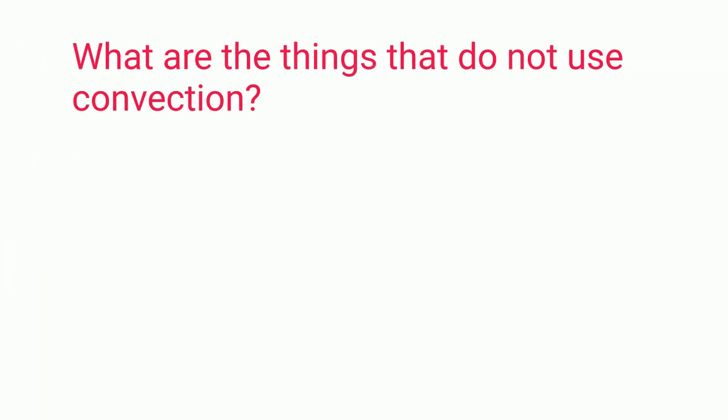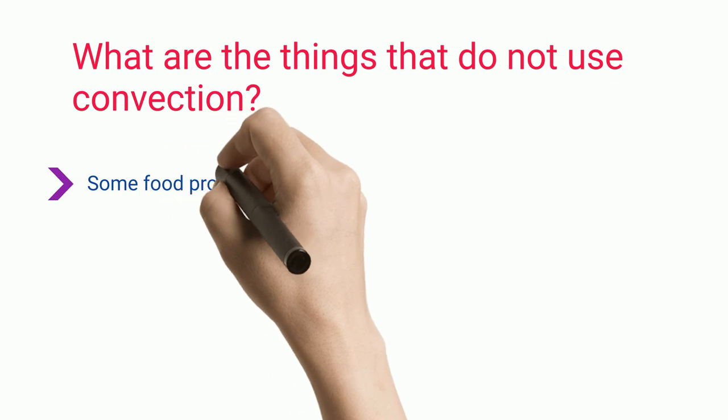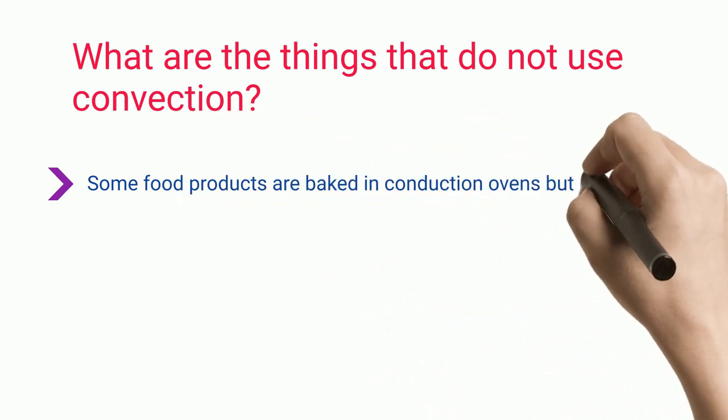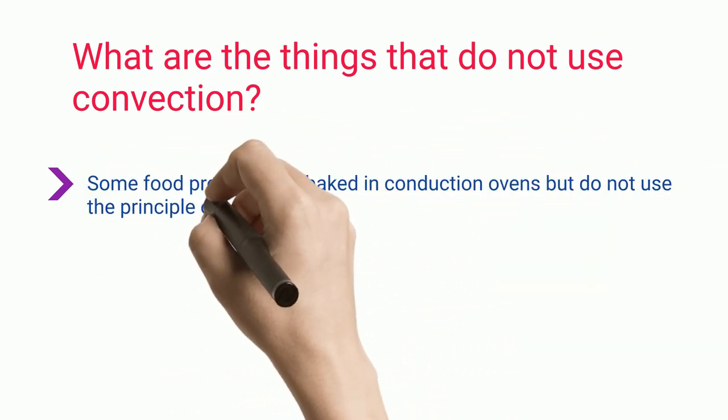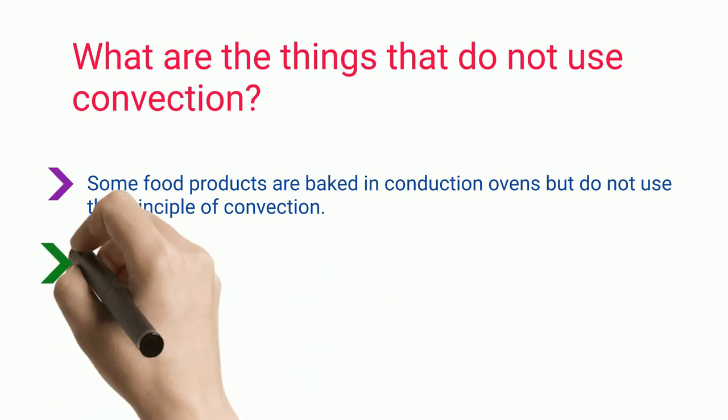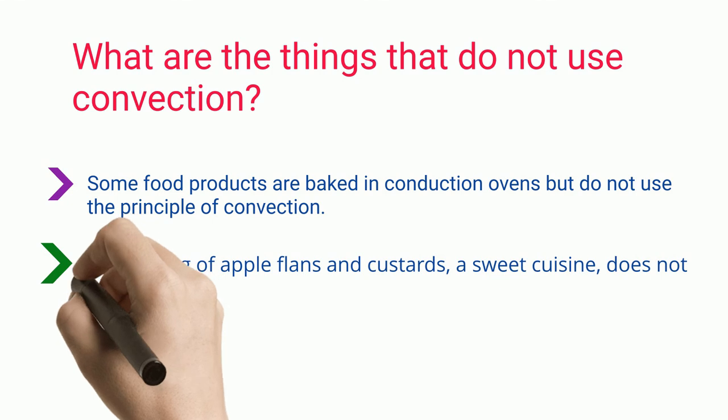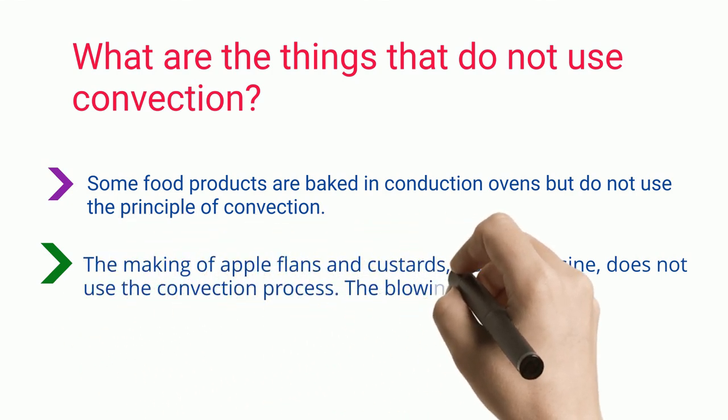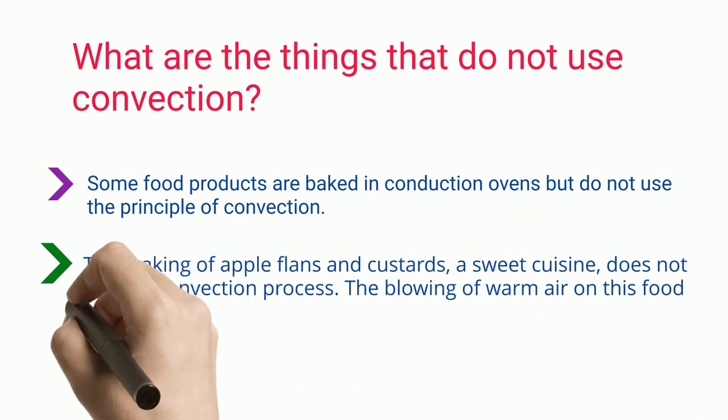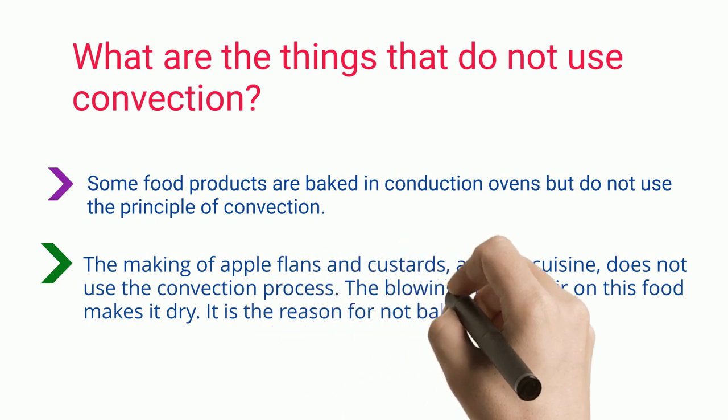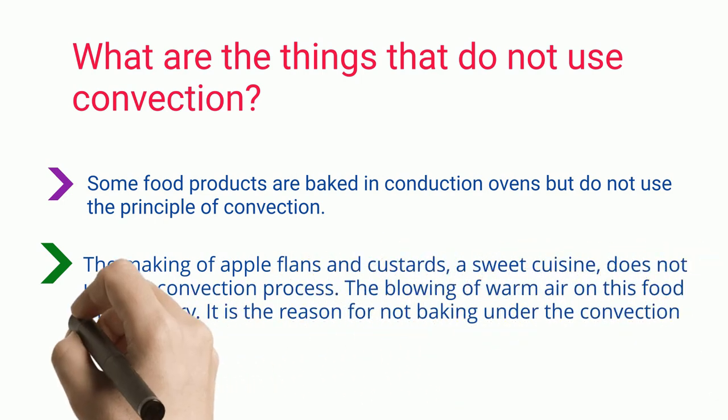What are the things that do not use convection? Some food products are baked in conduction ovens, but do not use the principle of convection. The making of apple flans and custards, a sweet cuisine, does not use the convection process. The blowing of warm air on this food makes it dry. It is the reason for not baking under the convection mechanism.